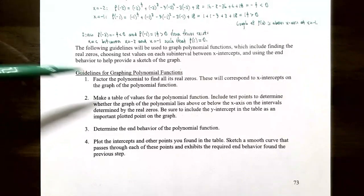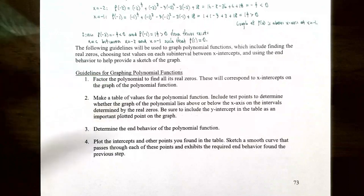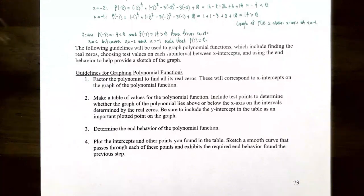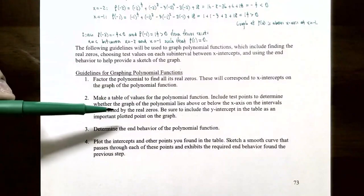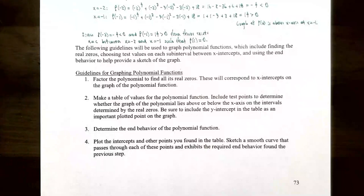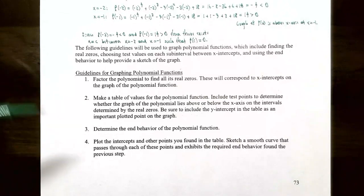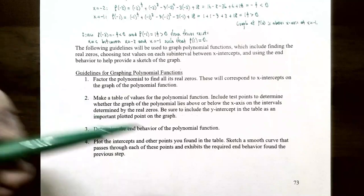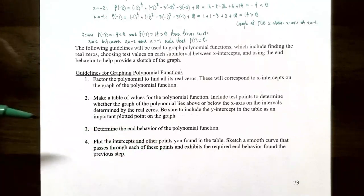Here are the guidelines for graphing a polynomial function. Step one: factor the polynomial to find all its real zeros, which correspond to x-intercepts on the graph. Step two: make a table of values including test points to determine whether the graph lies above or below the x-axis on each sub-interval, and include the y-intercept. Step three: determine the end behavior. Step four: plot the intercepts and other points, then sketch a smooth curve exhibiting the required end behavior.